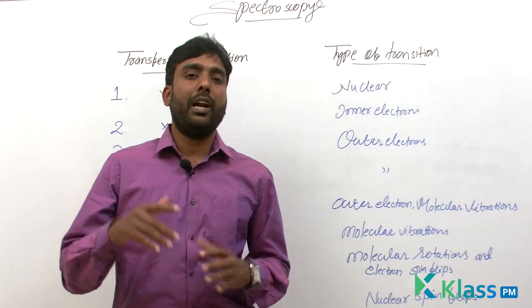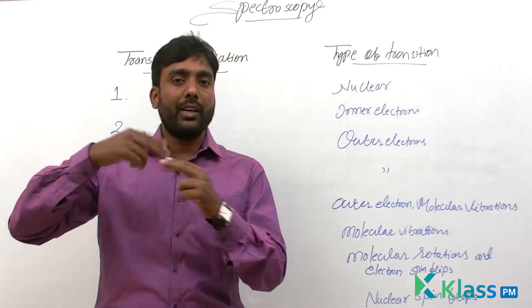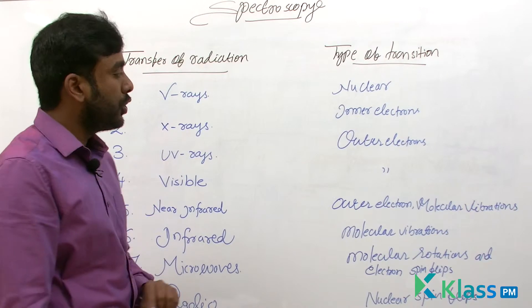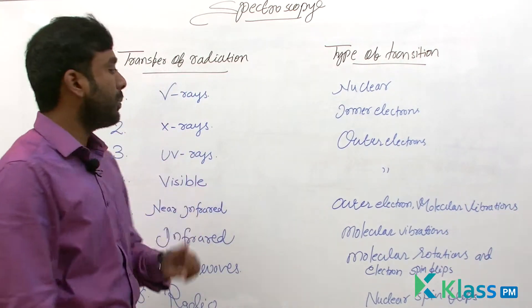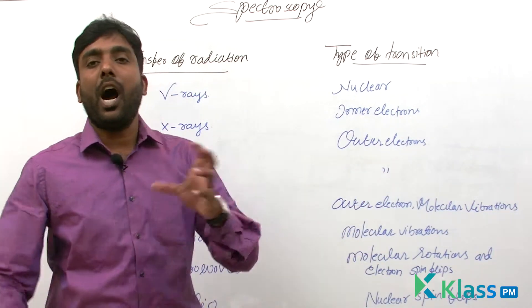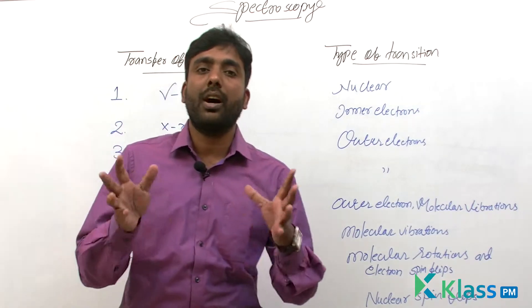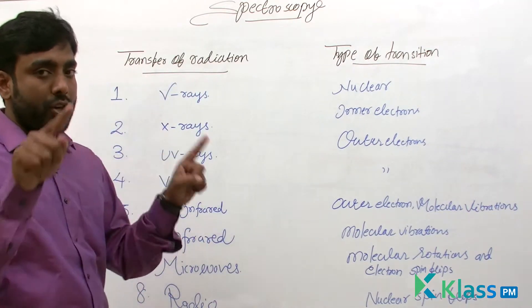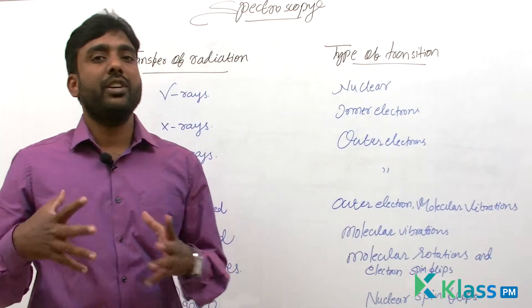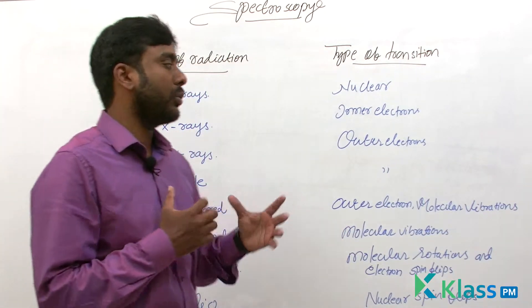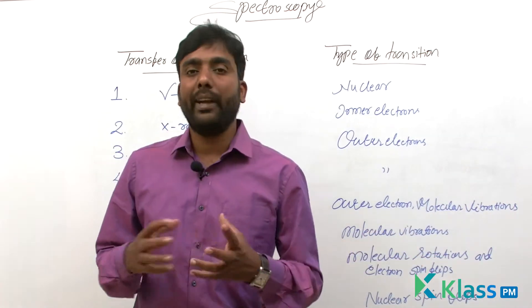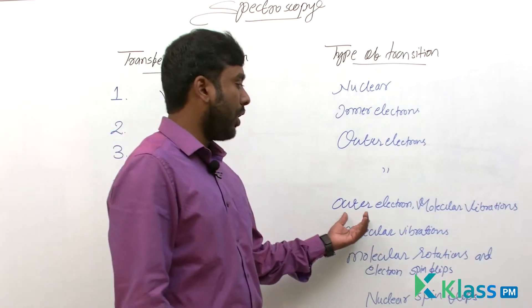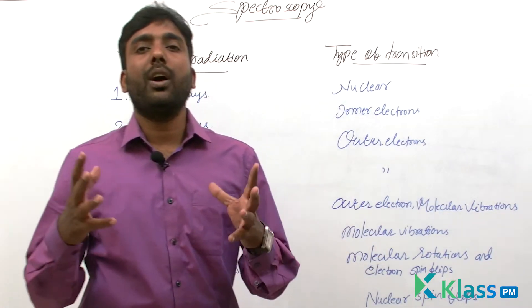The transition changes occur in the inner electrons. If you use UV rays and the visible spectrum, there is a change in the outer electrons — transition occurs in the outer electrons. If you use the near infrared range of spectrum, we get changes in the outer electrons and also some particular molecules make vibrations. Vibrational energy will also be produced — so outer electrons and molecular vibrations.